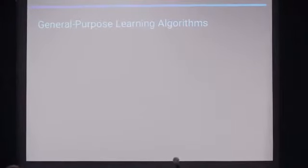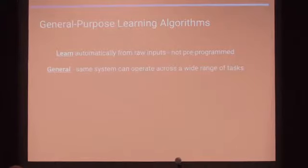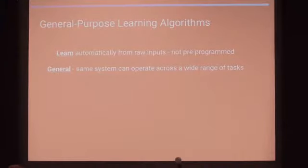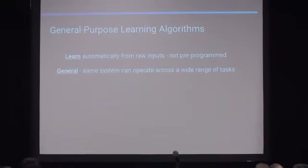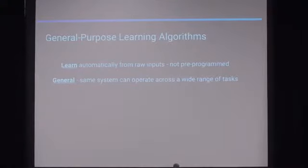So what we do at DeepMind is we're interested in algorithms. We call them general purpose learning algorithms. And we're only really interested in algorithms that can learn automatically from raw inputs or directly from raw experience, not pre-programmed or handcrafted in any way. And we're also interested in this notion of generality. So the idea that the same single system or single set of algorithms can operate out of the box across a wide range of tasks. In fact, this relates to our operational definition of intelligence that we use at DeepMind, which is we define it as the ability to perform well across a wide range of environments.